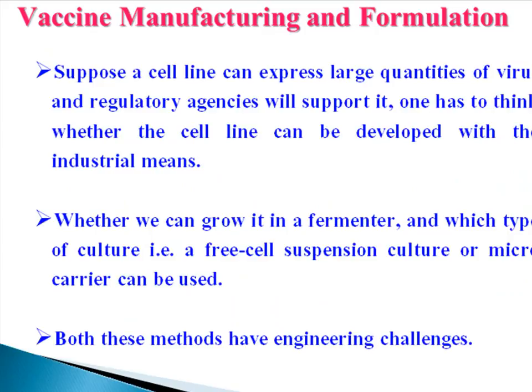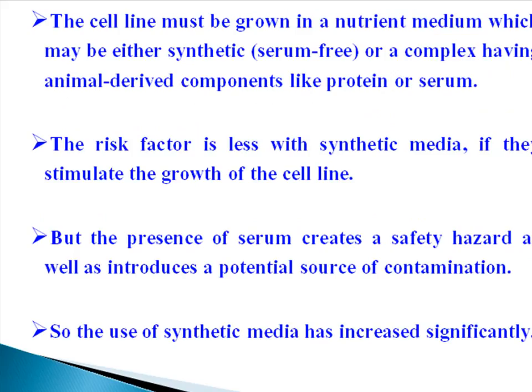Vaccine manufacturing and formulation: suppose a cell line can express large quantities of virus and regulatory agencies will support it. One has to consider whether the cell line can develop with industrial means, whether it can be grown in a fermenter, and which type of culture — free cell suspension culture or micro carrier — can be used. Both these methods have engineering challenges. The cell line must be grown in a nutrient medium which may be either synthetic (serum-free) or complex having animal-derived components like protein or serum. The risk factor is less with synthetic media. The presence of serum creates a safety hazard as well as a potential source of contamination, so the use of synthetic media has increased significantly.